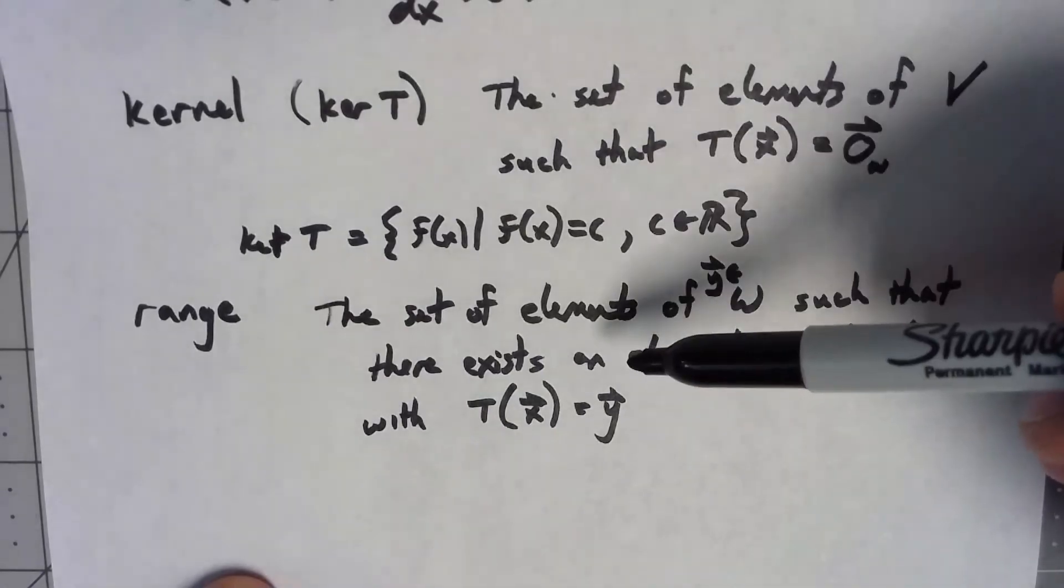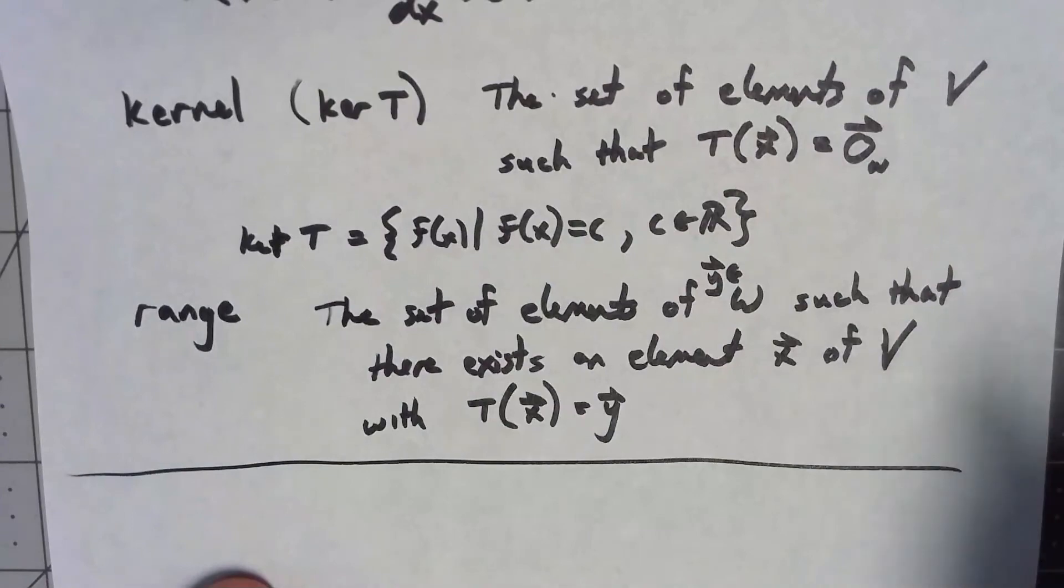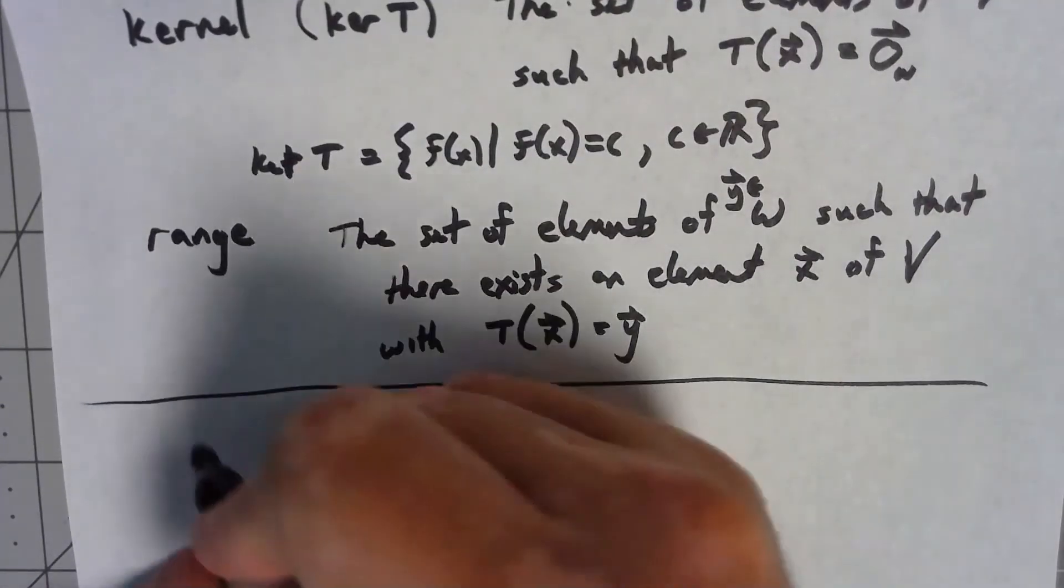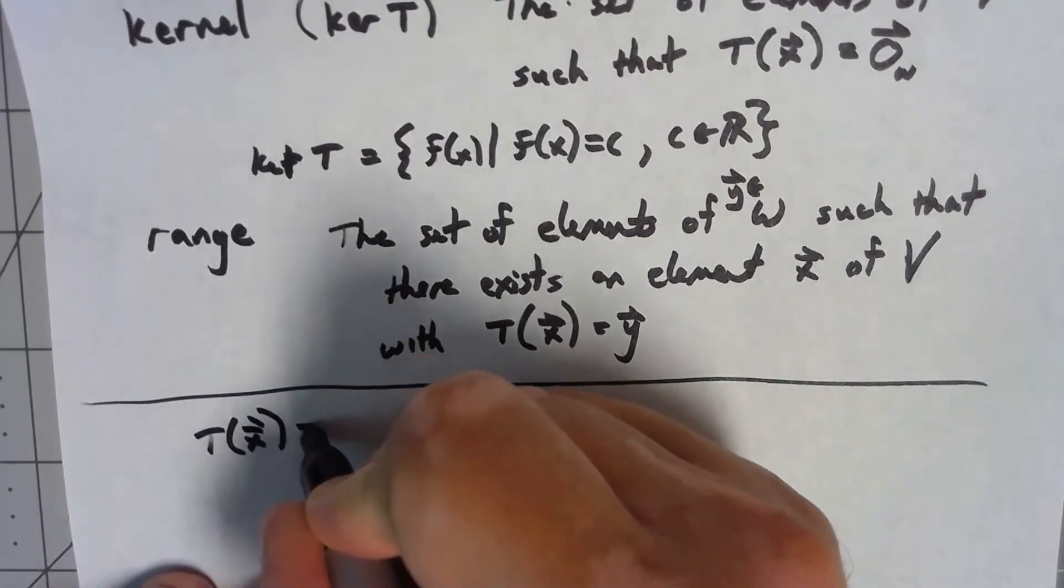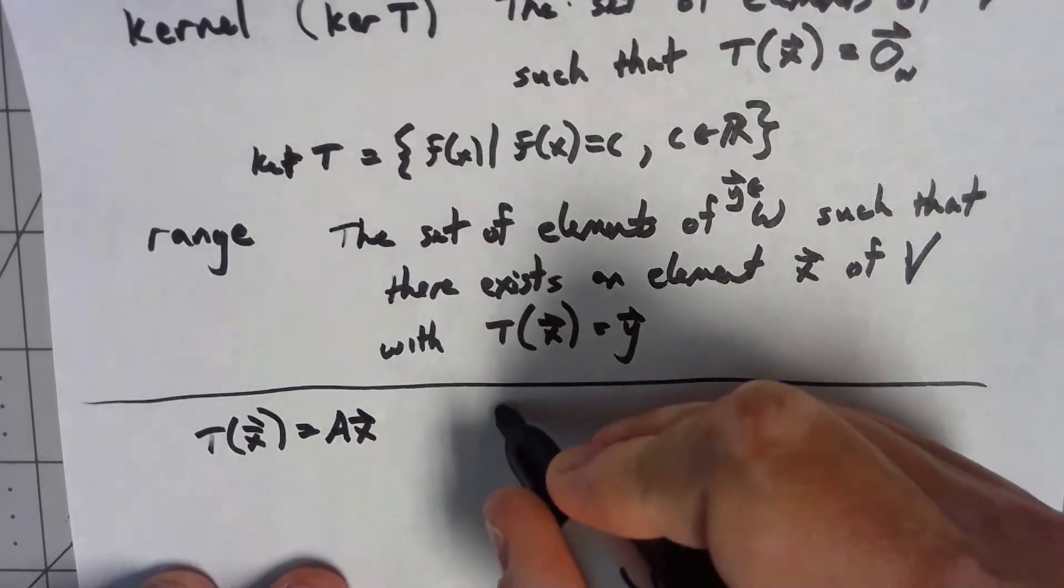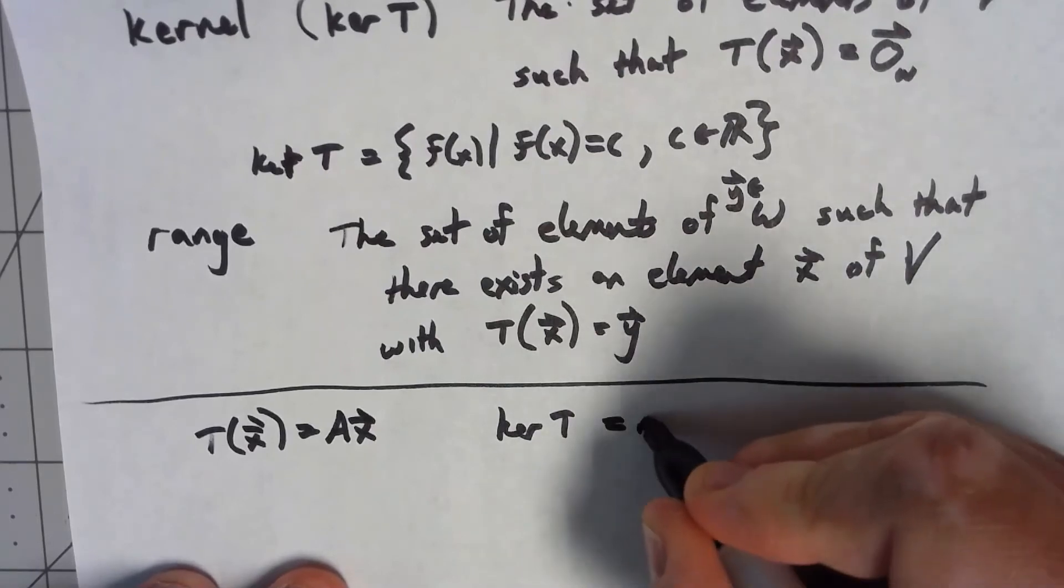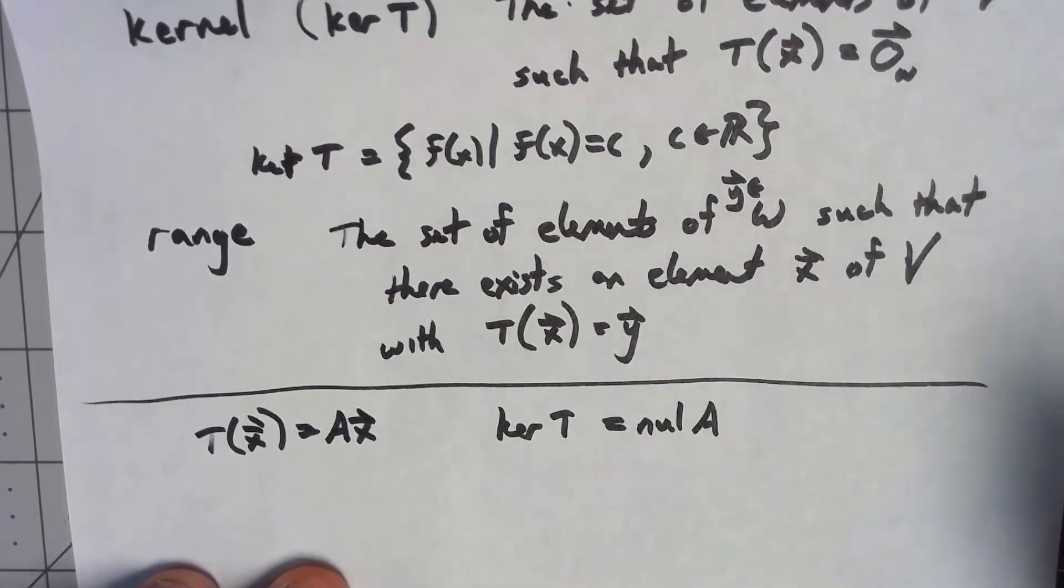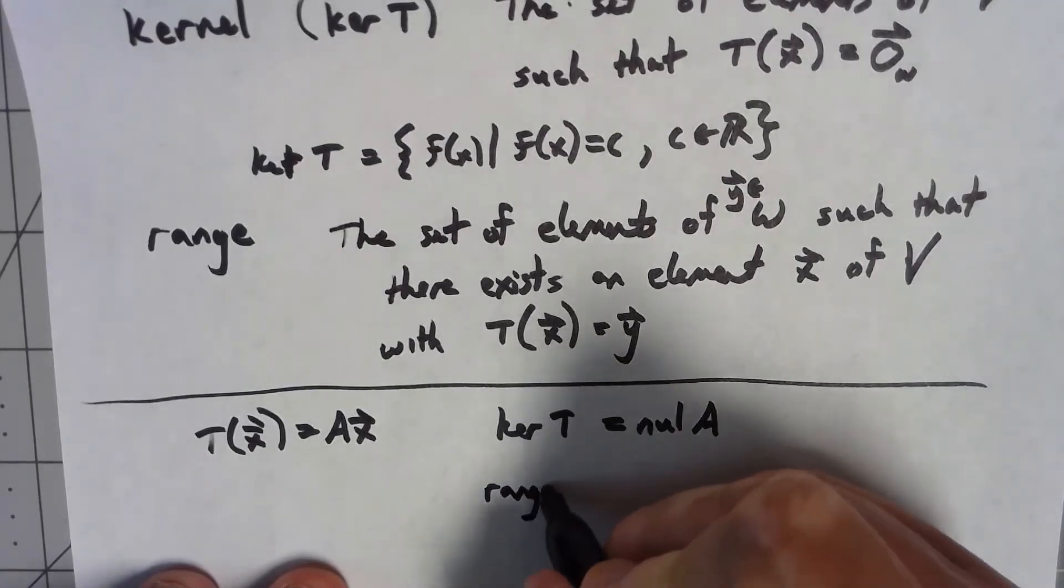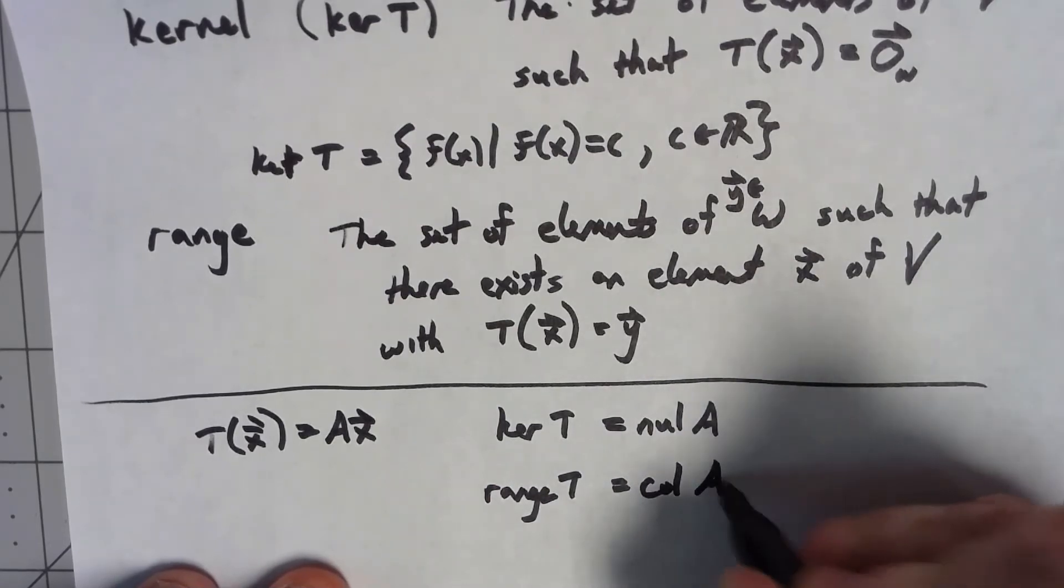Just one last comment here. If I were to go back to our first idea of a linear transformation, where I had T of x is equal to A x for some matrix A, the kernel of T is the same thing as the null space of that matrix A. And similarly, the range of T is the same thing as the column space of A.